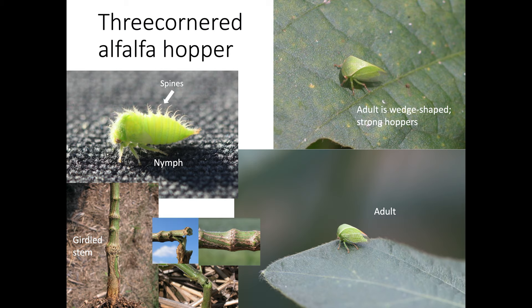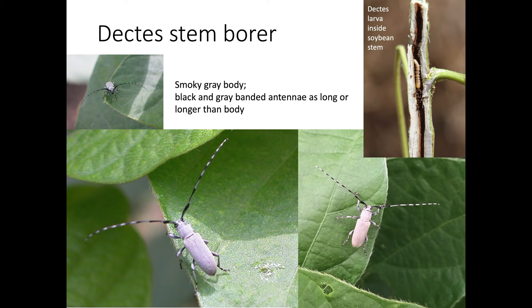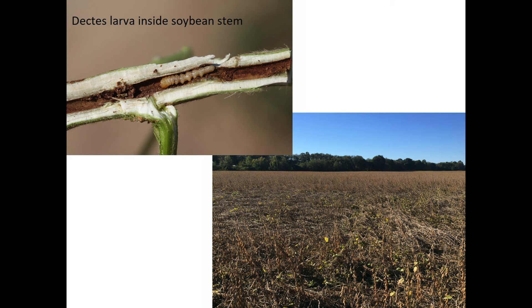We can occasionally find Dectes stem borers in Tennessee soybeans in late June through August. Dectes are members of the aptly named longhorn beetle family — the antennae are as long or longer than the body. The adult beetle is gray and approximately three-eighths of an inch in length. The adult female chews a small hole in the leaf petiole, or less commonly in stems, where she lays a single egg. The larva hatches and moves from an infested leaf petiole into the main stem, tunneling within the pith until the plant matures. However, this tunneling in leaf petioles and the main stem has little direct effect on yield.